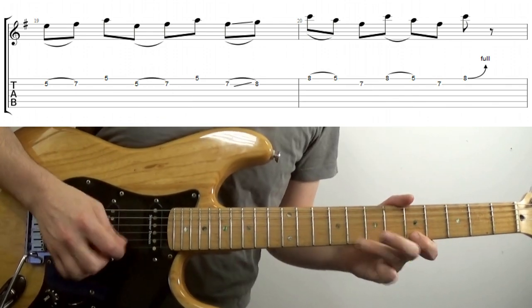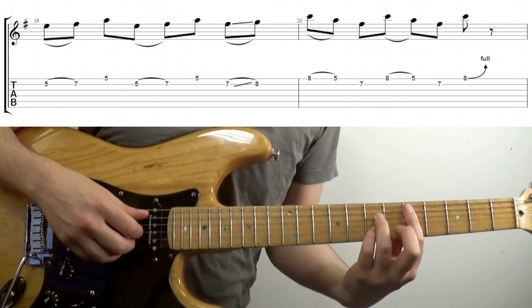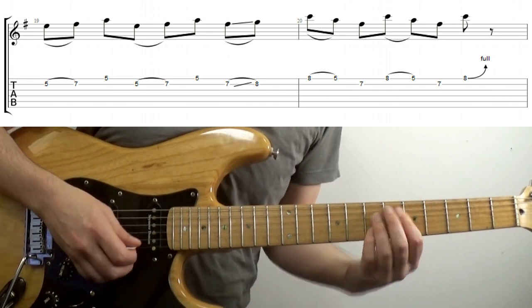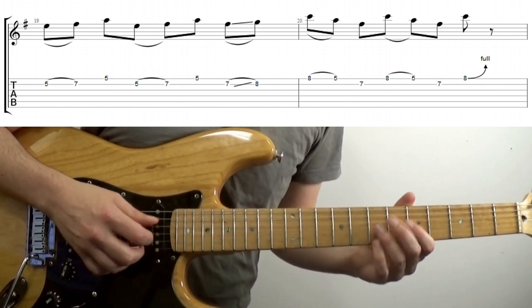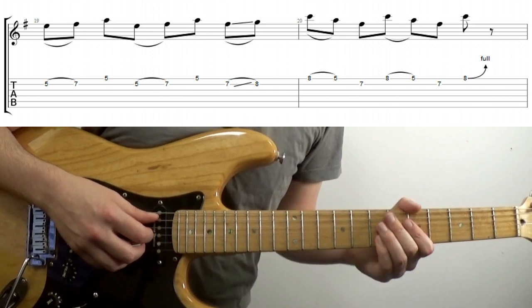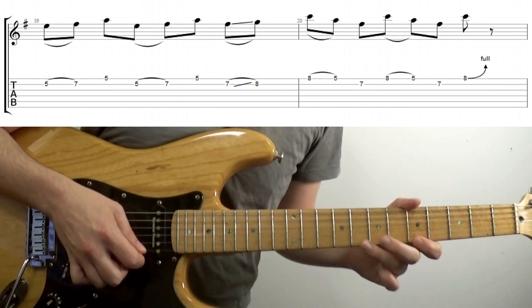Bonus tip, this lick here will also sound, and actually the full lick to be fair as well, will sound cool over a D7 chord as well. That second bar is an F diminished triad, which is part of D7, D7 being a D, F sharp A and C, F diminished being F sharp A and C.